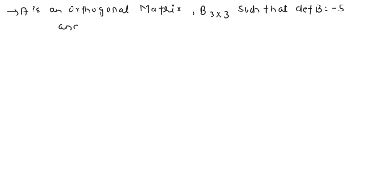In this question, we have been given that A is an orthogonal matrix. B is a matrix of order 3 by 3 such that determinant of B is given to be minus 5. And then we have been defined a matrix C which is minus 3 times A transpose B cube times A. We need to find out what is the determinant of this matrix C.